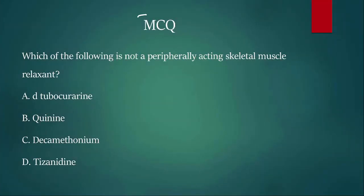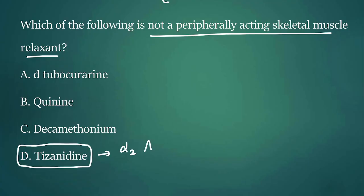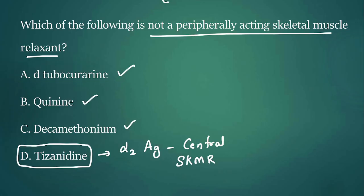MCQ 3: Which of the following is NOT a peripherally acting skeletal muscle relaxant? The answer is D, tizanidine. Tizanidine is an alpha-2 agonist, which is a centrally acting skeletal muscle relaxant. All other options are peripherally acting skeletal muscle relaxants.